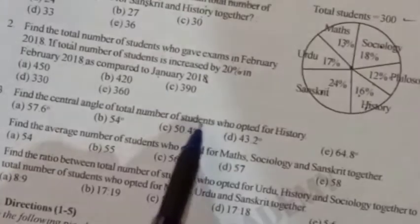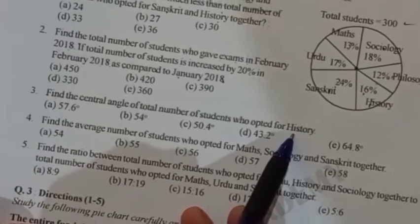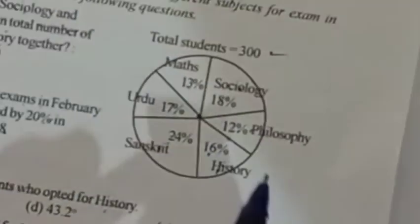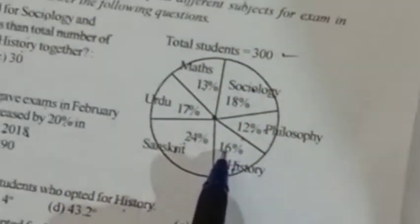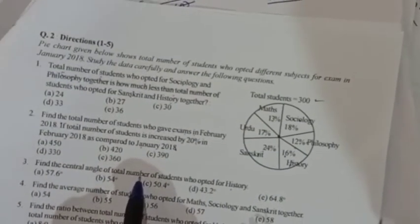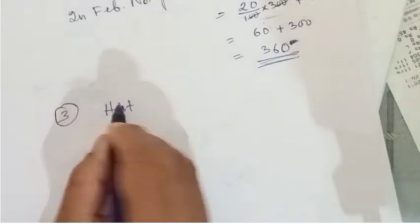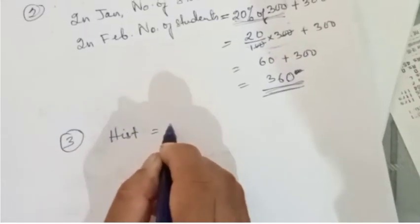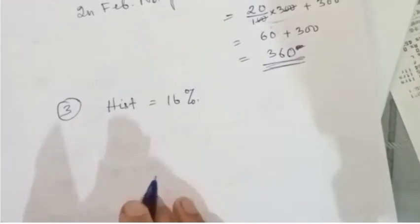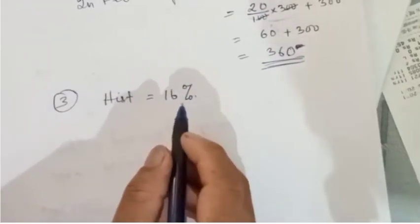Question three: Find the central angle of the total number of students who opted for History. History is sixteen percent. We need to find the central angle.